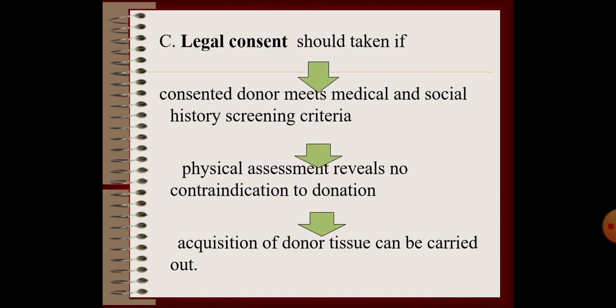Legal consent should be taken if the consented donor meets the medical and social history screening criteria. When the consented donor has no defects in the cornea, the person can be selected as a donor. Physical assessment should reveal no contraindication to donate. Only then can we select a donor and acquisition of donor tissue can be carried out.